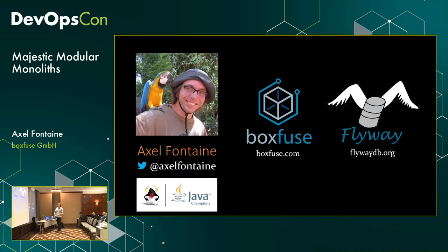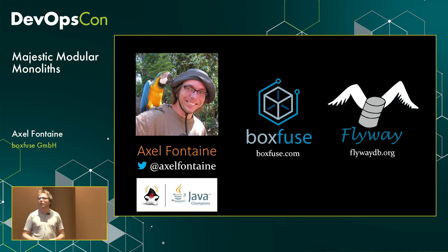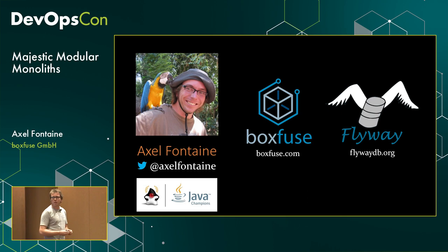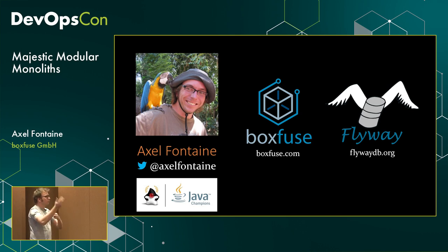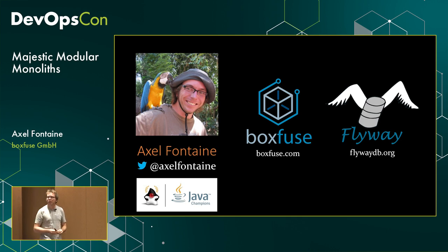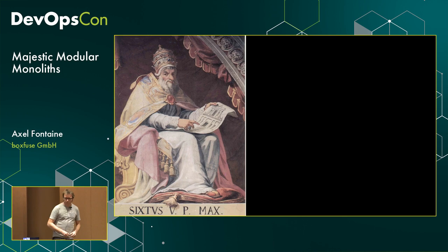My name is Axel, originally from Belgium but living here in Munich now — quite nice being able to come by bicycle to a conference. I'm very much coming from the dev side of things. My background is development; as you can see with the Java Champions logo, I come from a JVM background. I run a small company here in Munich called BoxUse, where we have a deployment tool for AWS called BoxUse and a tool called Flyway for database migrations and schema evolution.